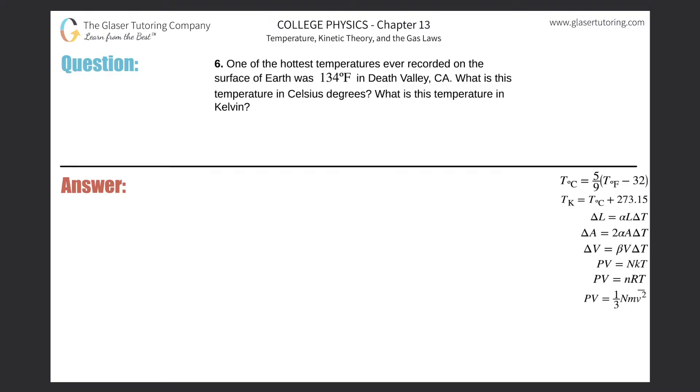Number six: one of the hottest temperatures ever recorded on the surface of Earth was 134 degrees Fahrenheit. What is this temperature in Celsius and what is this temperature in Kelvin? All right, so first thing is let's work with Celsius. I need a formula that relates Celsius to Fahrenheit and we have one over here.